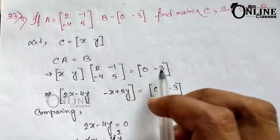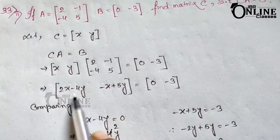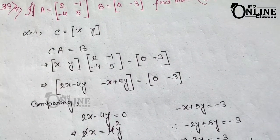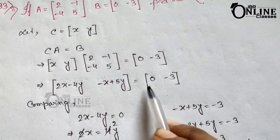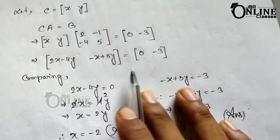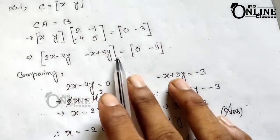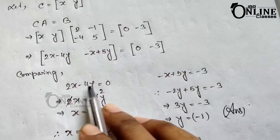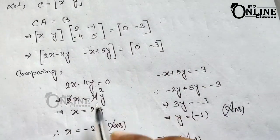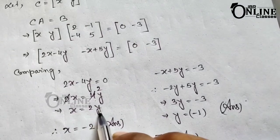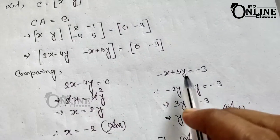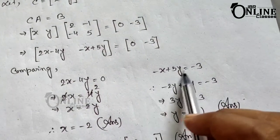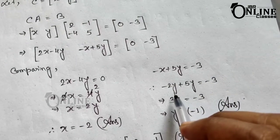Let C equal [x, y], a row matrix. Then CA equals B means [x, y] times matrix A equals B. Multiplying gives [2x minus 4y, minus x plus 5y] equals [0, minus 3]. Comparing elements: 2x minus 4y equals 0, so x equals 2y.